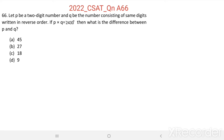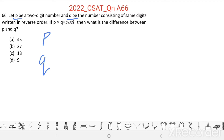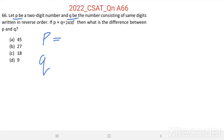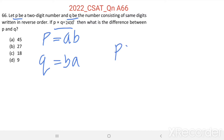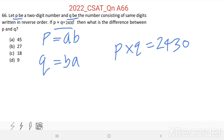P and Q are two two-digit numbers where one number is formed by reversing the digits of the other number. That means if suppose P is formed by digits A and B, then Q equals BA. They said P into Q equals 2430.